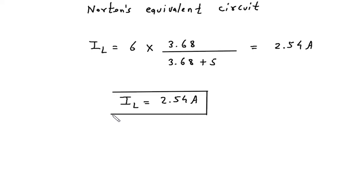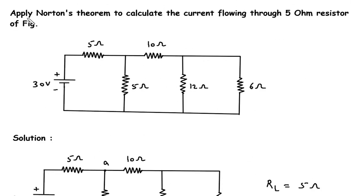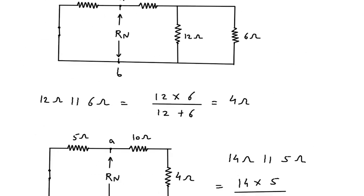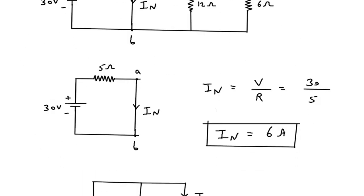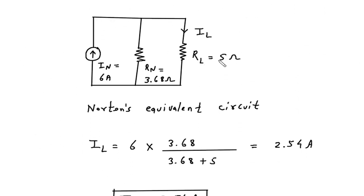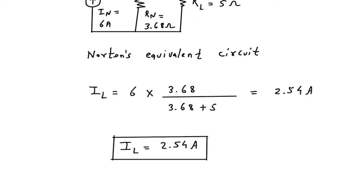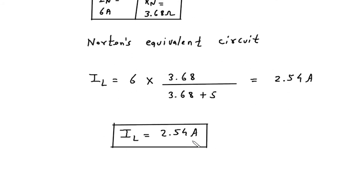So what we had to find was the current flowing through the 5 ohm resistor using Norton's theorem. Therefore, the current through this 5 ohm resistor is 2.54 ampere. This is our final answer.